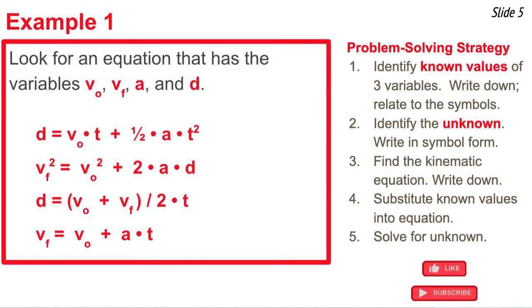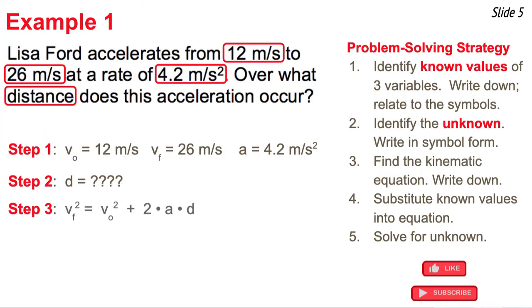Now what I'm going to do is find a kinematic equation to use that has in it v original, v final, a, and d. So here are the four equations. I'm looking for the ones with those four variables that are in my problem. It ends up being the second equation in the list. So what I'm going to do is write that equation down. There it is. Step four is to take the three known values and substitute them into this equation and then to perform some algebra in order to solve for the unknown. So here's my substituted values.